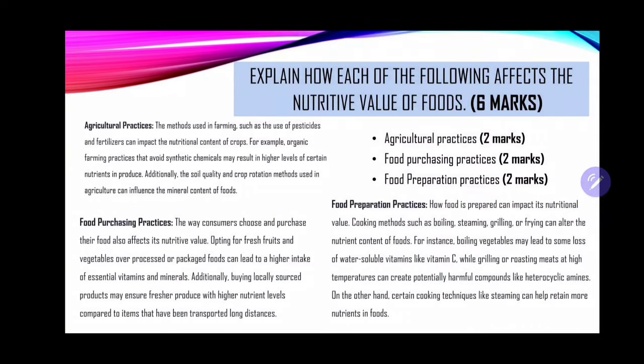Next, explain how each of the following affects the nutritive value of foods. There are three factors: agricultural practices, food purchasing practices, and food preparation practices. As it relates to agricultural practices, the methods used in farming, such as the use of pesticides and fertilizers, can impact the nutritional content of crops. Organic farming practices that avoid synthetic chemicals may result in higher levels of certain nutrients in produce. Soil quality and crop rotation methods can also influence the mineral content of foods.